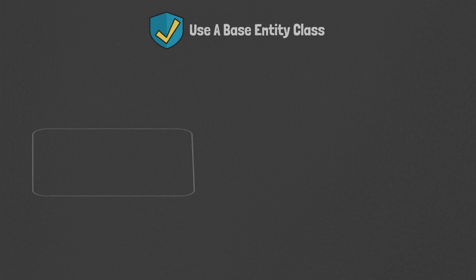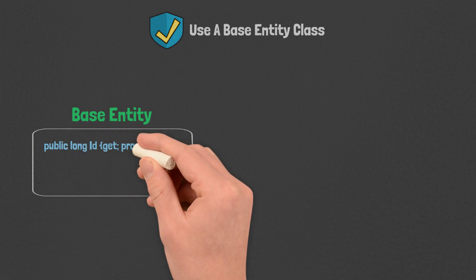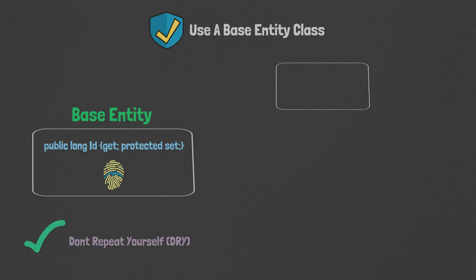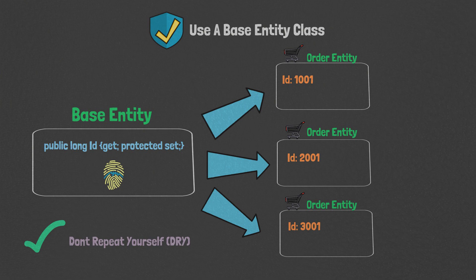Use a base entity class. Another best practice is to use a base entity class. As you're building out your entities in your domain, this is something that naturally rises to the surface. You will find opportunity to centralize some entity logic in its own base class. We generally want to use a base entity class because it helps us adhere to the DRY principle, which stands for Don't Repeat Yourself. We want to handle our identity logic in one class, and by centralizing this logic, we're able to share common code such as identity creation throughout all of our entities.